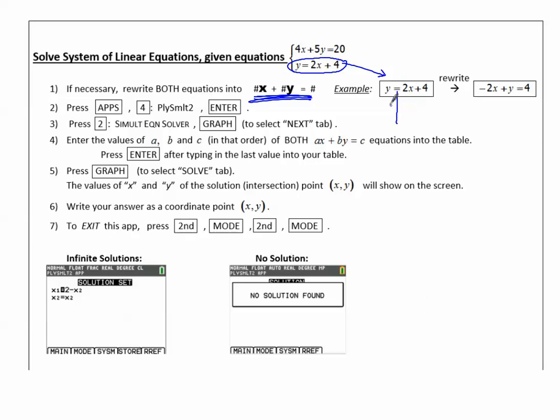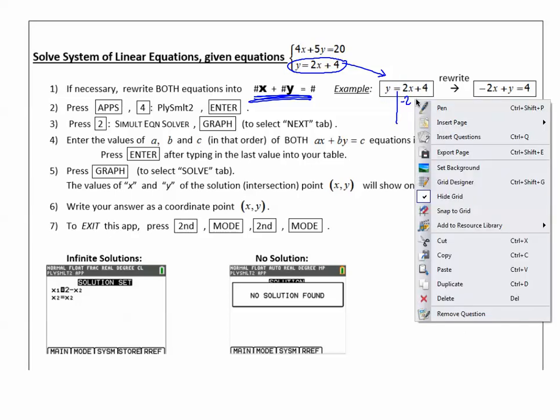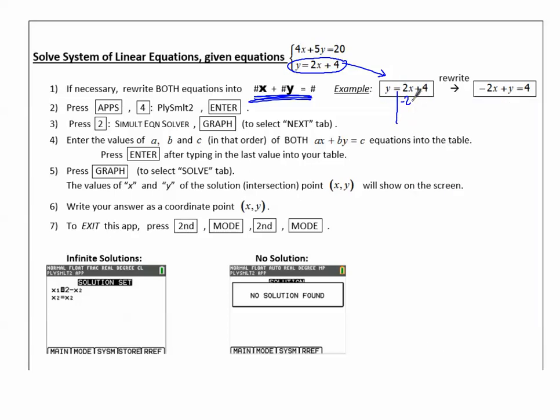Well, here's the equal sign. If I need to move that over, I'm subtracting 2x from both sides. So it gives me -2x + y = 4.